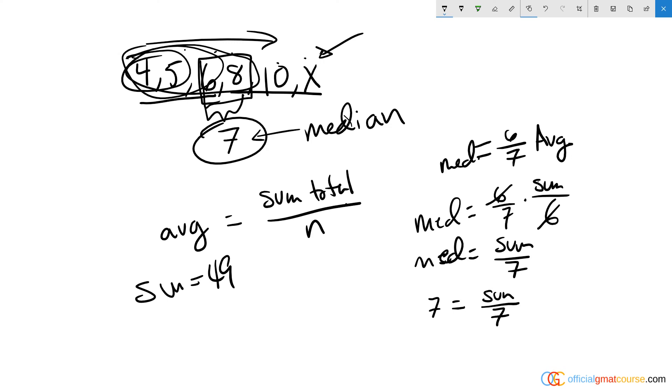So I have 33 plus X equals 49, and that means that X must equal 16. It did turn out that X was an integer, and that means that our answer is A, 16.